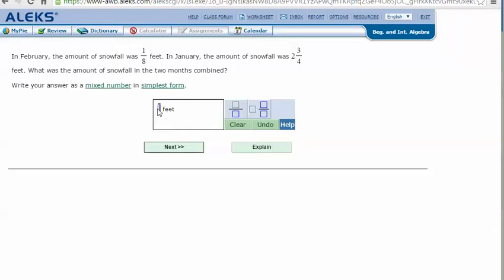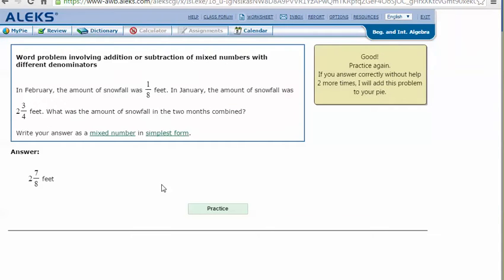In my Alex screen, type in the answer that I got in my notes, two and seven-eighths. And click Next. And it says that I got the correct answer. Thanks for watching.